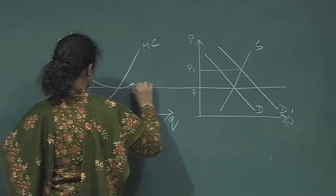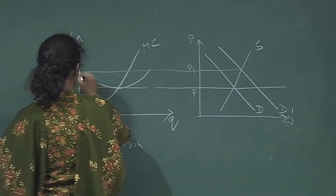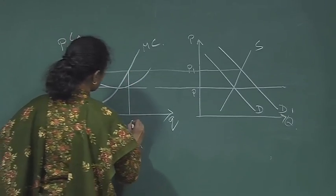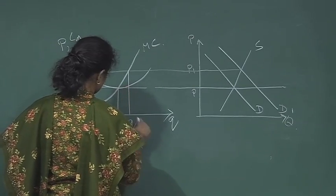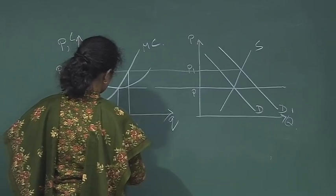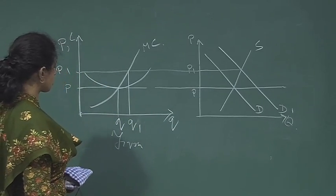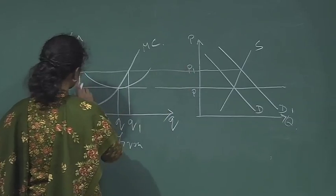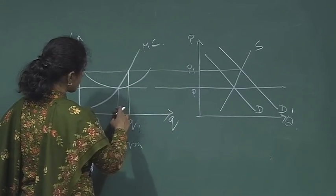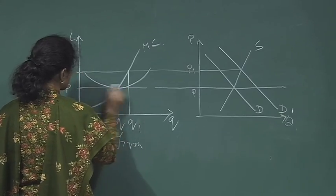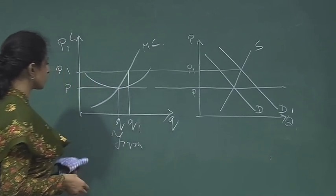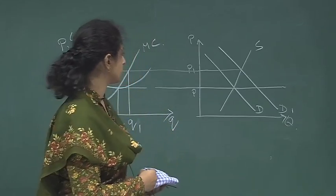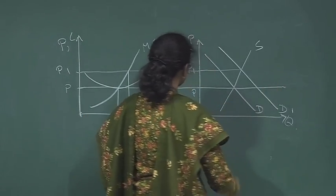Initially the firm was producing at Q, and now with price at P1 the firm is producing a higher level of output Q1. Since the price has gone up, the average cost is now lower than price and this firm is basically earning a profit. When this firm is earning a profit, looking at that profit other firms enter the market.